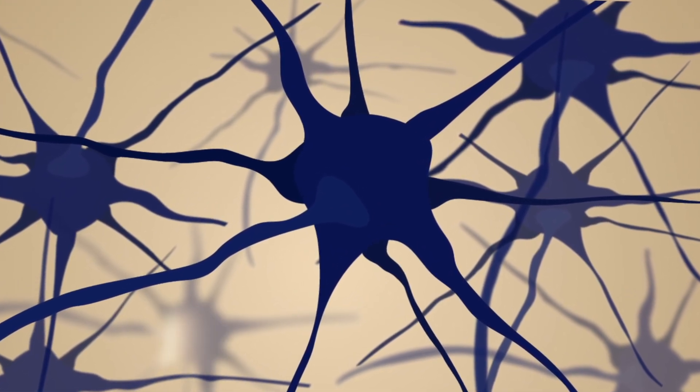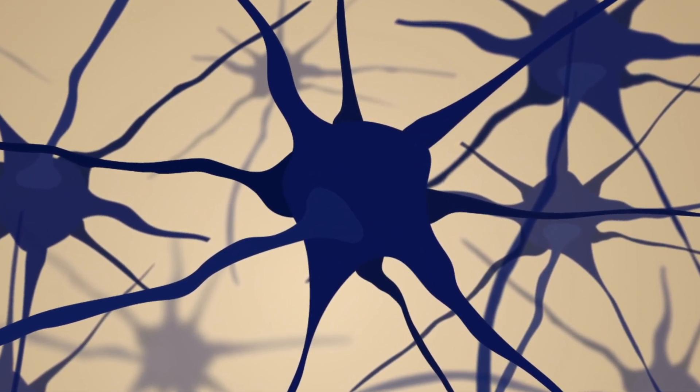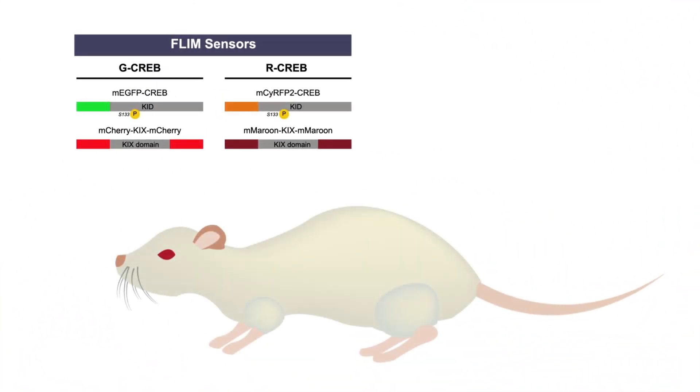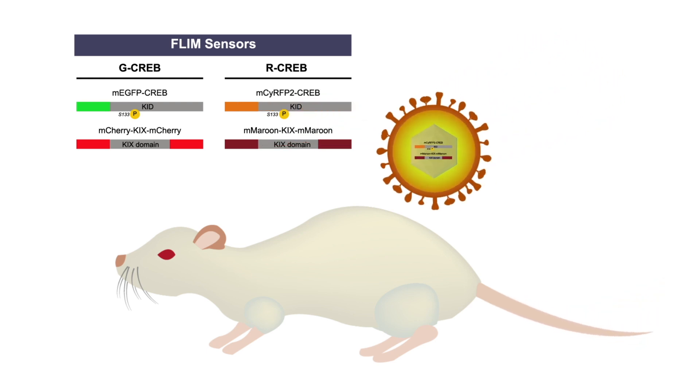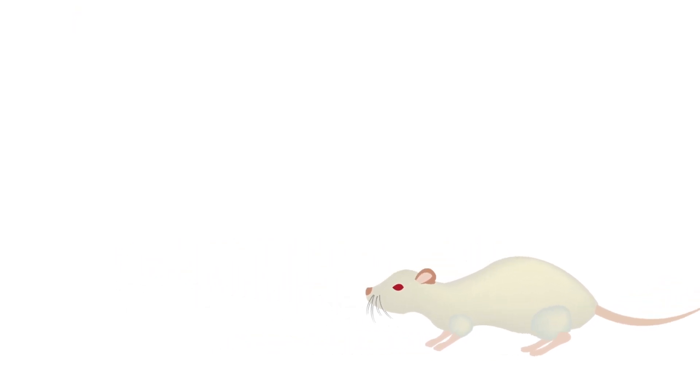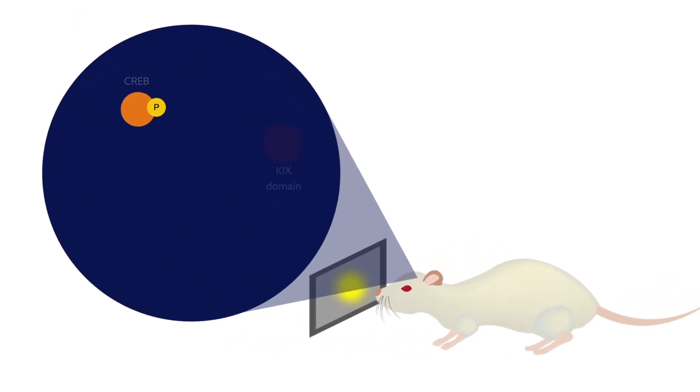The researchers designed their biosensor to track CREB activity dynamics in single neurons over extended periods of time. They virally expressed the biosensor, which allowed them to visualize CREB activity in live mice, including during imaging sessions when the mice were exposed to visual stimuli such as movies.